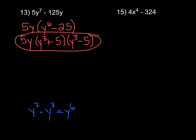Finally, let's look at number 15. When we look at it, this is a difference, and both terms are perfect squares, so you could jump right into factoring. But I find it easier to factor out a greatest common factor from the beginning — if you don't do it first, you'll have to do it later. Looking at both terms, the only thing I can take out is a 4. So factoring out 4 leaves us with x to the 4th minus 81.